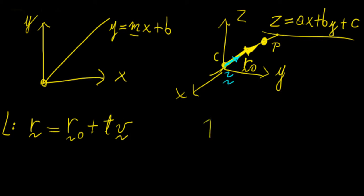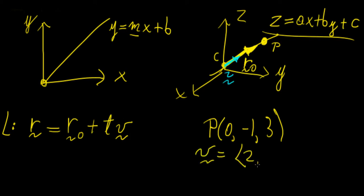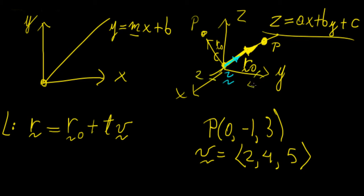Let's say I give you a point in space: point P is (0, -1, 3), and I want you to find the equation of a line that crosses that point going in the direction of the vector (2, 4, 5). Basically you're drawing a line through a point — we have 0 in x, minus 1 in the y direction, so point P would be somewhere there. That gives us our vector R naught, and then V is pointing in a different direction: 2 in x, 4 in y, and 5 in z. So this is the line pointing in the direction of V that crosses point P.